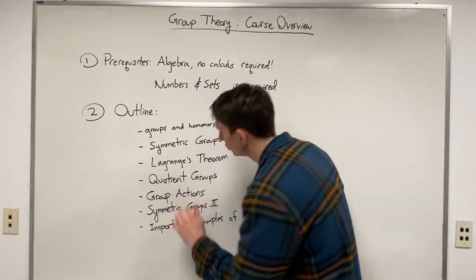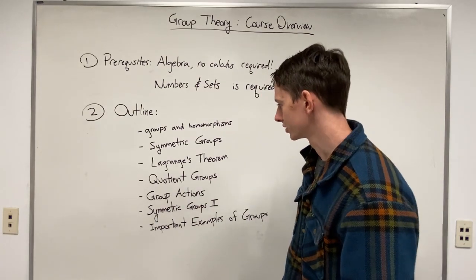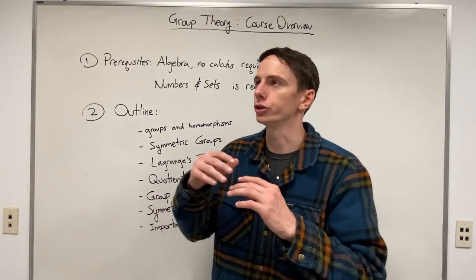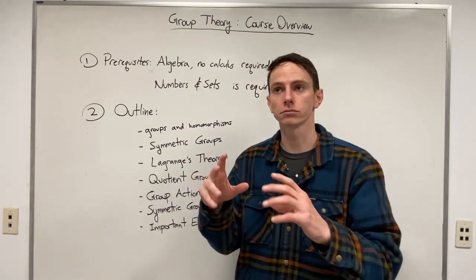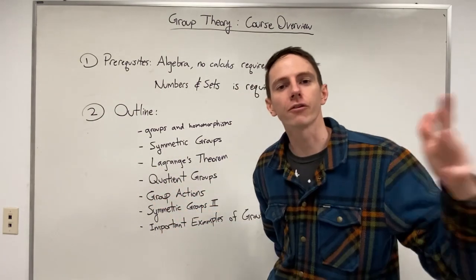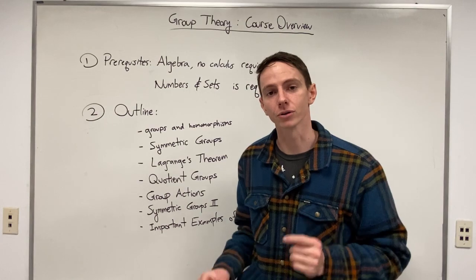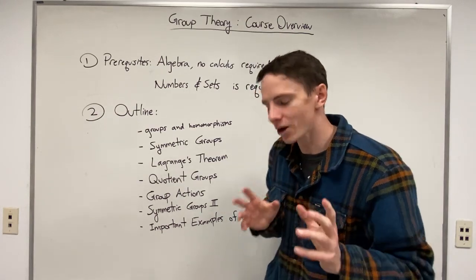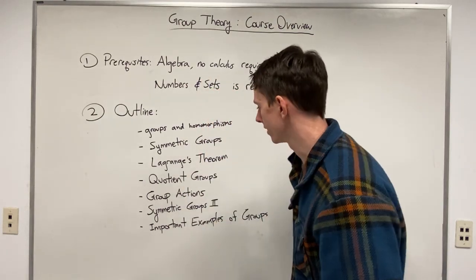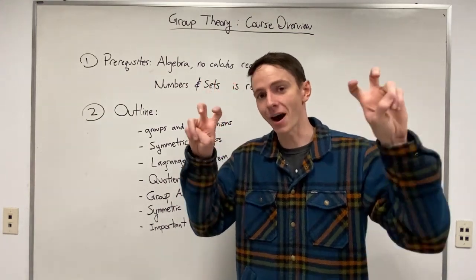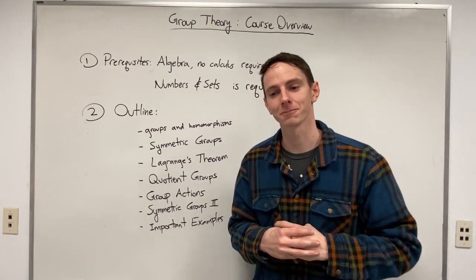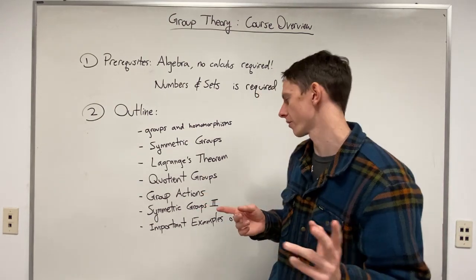Then next thing, we're going to move on to quotient groups. So Lagrange's theorem can be used to talk about a general subgroup for a given group, but quotient groups really start off with a special type of subgroup called a normal subgroup. And it turns out that if we have a group and we have a normal subgroup contained within it, then we can effectively divide the two to obtain what is called a corresponding quotient group.